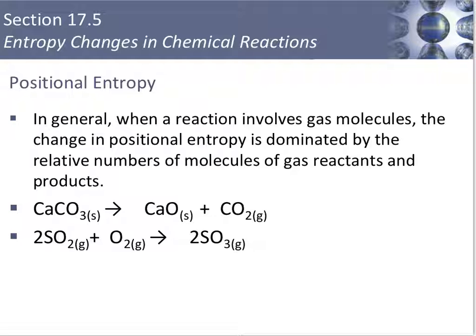For example, in the first reaction there are zero moles of gas on the reactant side and one mole of gas on the product side. More gases being produced, so that's an increase in entropy, and our delta S would be positive.